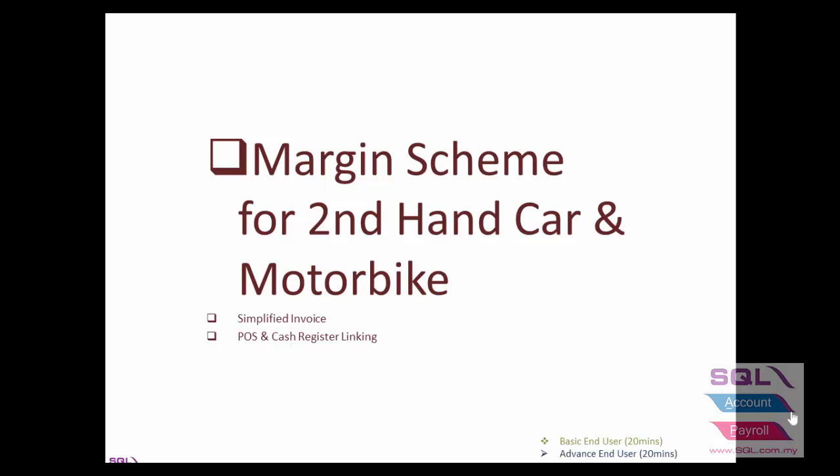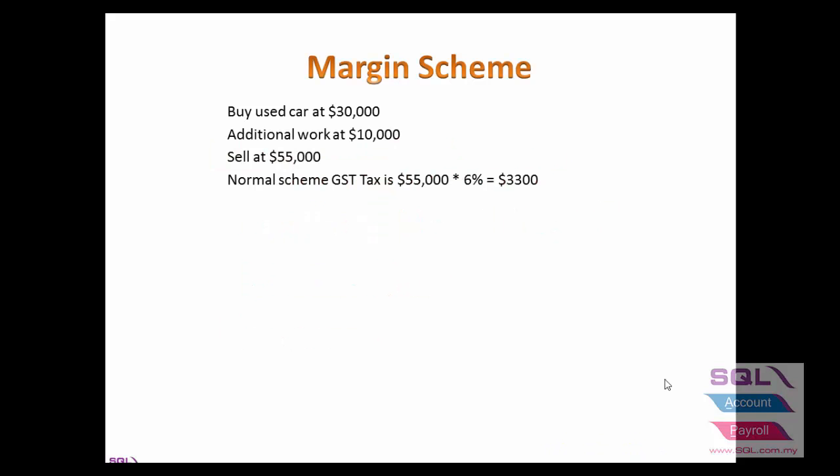Today we will talk about the margin scheme for second-hand cars and motorbikes. If you are in the business of selling second-hand cars, you buy a used car at $30,000, fix and repair it for an additional $10,000, and sell it at $55,000. Under the normal GST scheme, the tax formula is $55,000 times 6%, which equals $3,300.